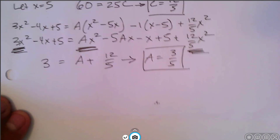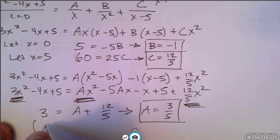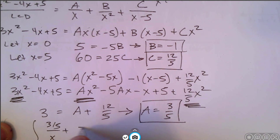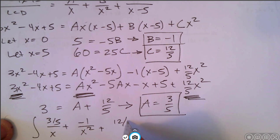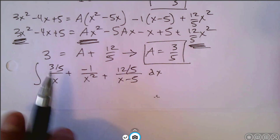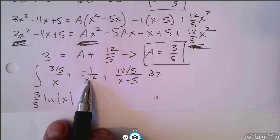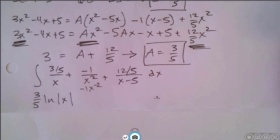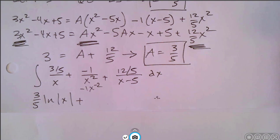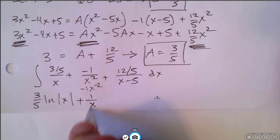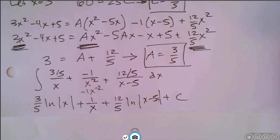Now we have a, b, and c. We rewrite the integral as 3 fifths over x plus negative 1 over x squared plus 12 fifths over x minus 5, dx. Taking the antiderivative: 3 fifths natural log of x, then for negative 1 over x squared think of it as negative x to the negative 2 — using the power rule, bump it up, giving x to the negative 1 divided by negative 1, which becomes plus 1 over x. And the last term gives 12 fifths natural log of x minus 5, plus c.